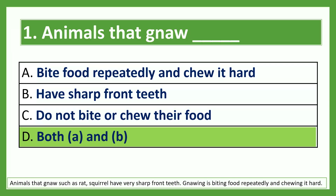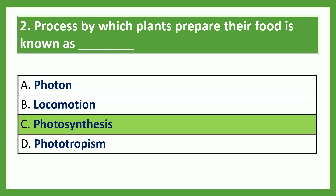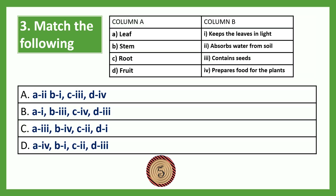The hard process by which plants prepare their food is known as — Option A: photon; Option B: locomotion; Option C: photosynthesis; Option D: phototropism. The answer is Option C, photosynthesis.